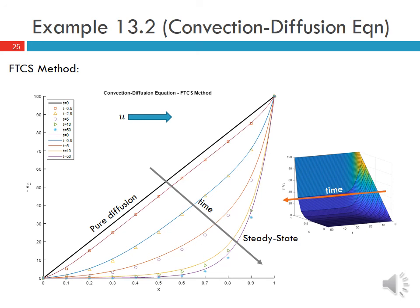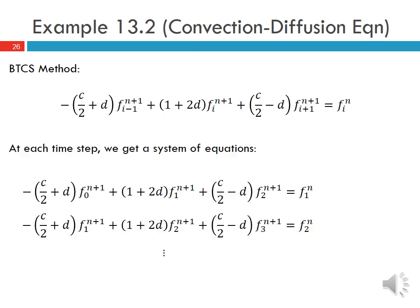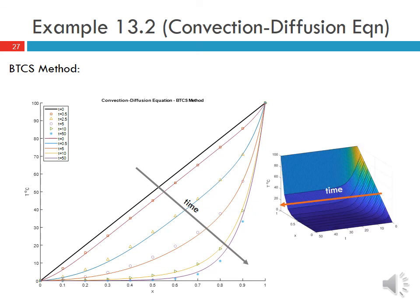We can also show this on a contour surface plot, where one axis is temperature, another is the spatial direction X, and the third is time. This shows the initial profile and how it changes to reach the final profile. Using the Backward Time Centered Space method, at each time step we get a system of equations which can be written in matrix form and solved in code, giving a very similar result. Time marches in one direction and the results can again be viewed using the contour surface plot. Those are some examples for parabolic PDEs.